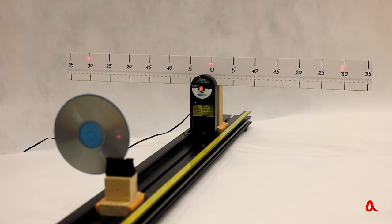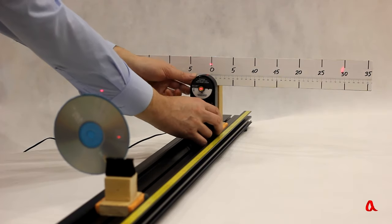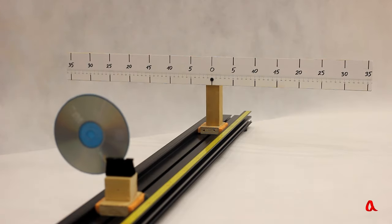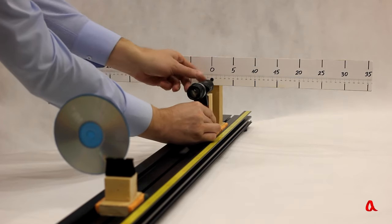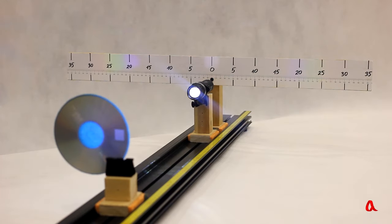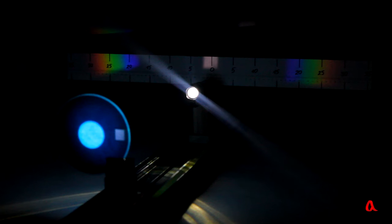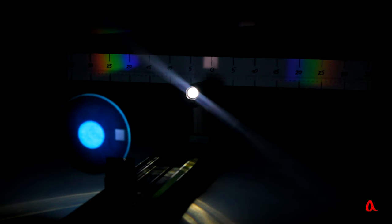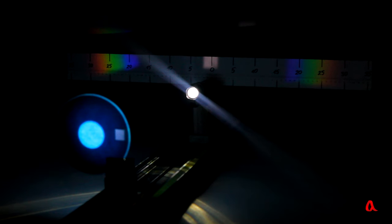And if you use a white flashlight instead of a single color laser (such a source is called monochromatic), then the light with different wavelengths will be scattered on the diffraction grating at different angles. And the longer the wavelength, the more deflected the light is.